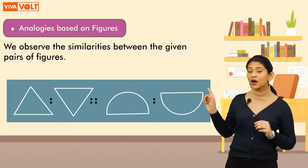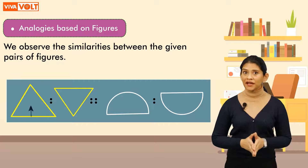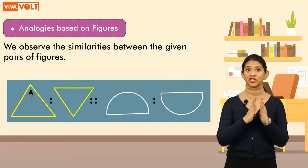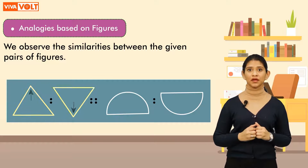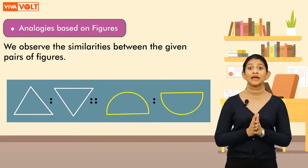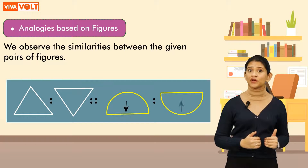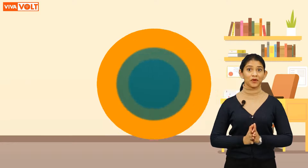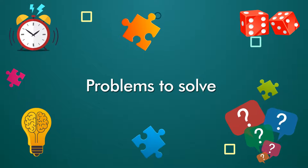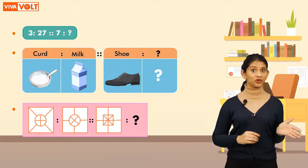Let's look at one more example. Here we have two triangles on the left side — the first triangle is in the upward direction and the second triangle is in the downward direction. In the same way, the semicircle on the right is also turned in a downward direction. We have now learned about all four types of analogies. Now solve the given problems based on analogy and find the missing numeral.